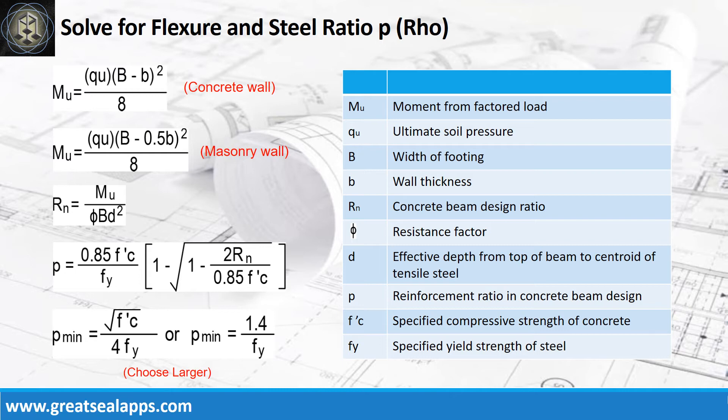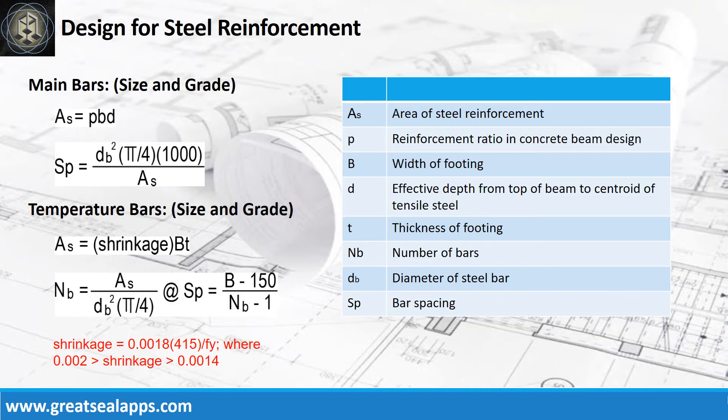Get the concrete beam design ratio Rn to solve the reinforcement ratio ρ, and check the minimum reinforcement ratio per ACI code. Then solve the area of steel for the main bars and its equivalent bar spacing, and the area of steel for the temperature bars and its equivalent bar spacing.